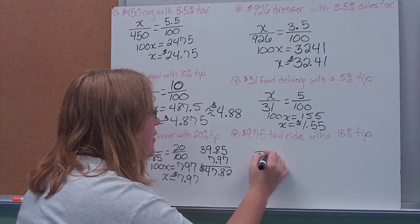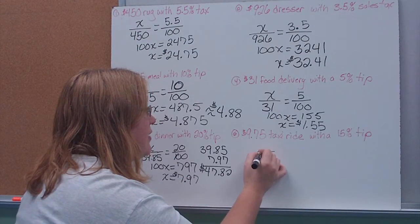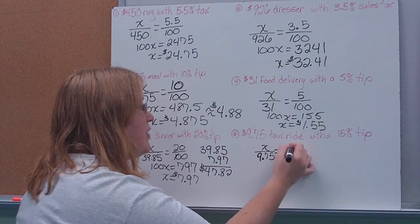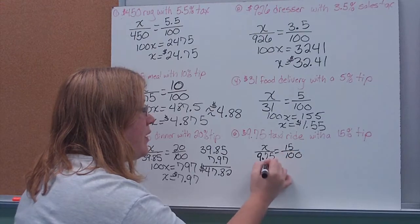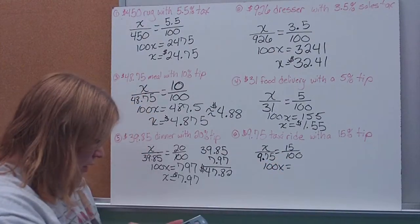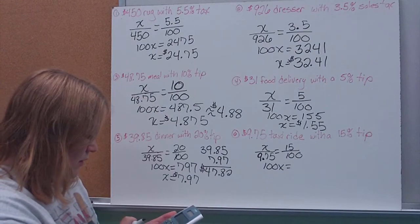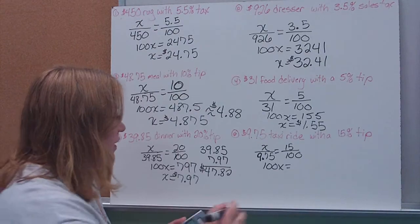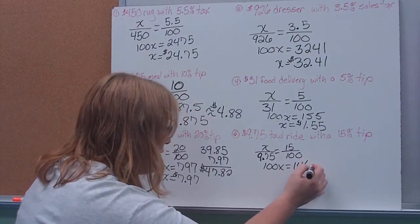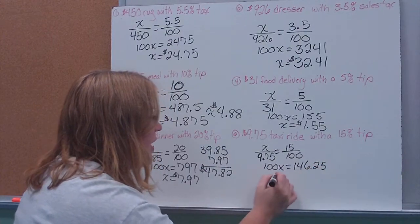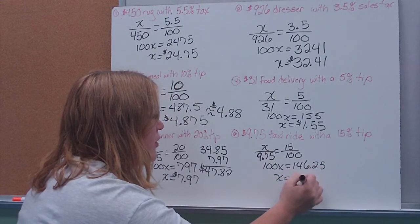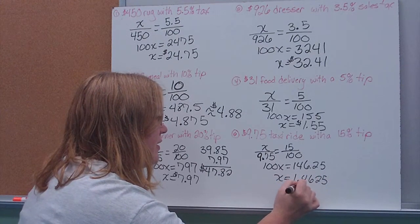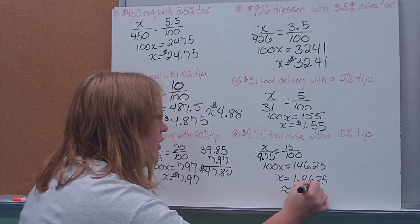So here we're taking a taxi ride. It only cost us $9.75. We're going to figure out how big a 15% tip on that would be. So again, cross-multiply. $9.75 times 15 gives me 146.25. And again, what I'm going to notice here is I'm going to have to round because I'm going to wind up with extra digits that I don't need. So I'm going to call this $1.46 tip.